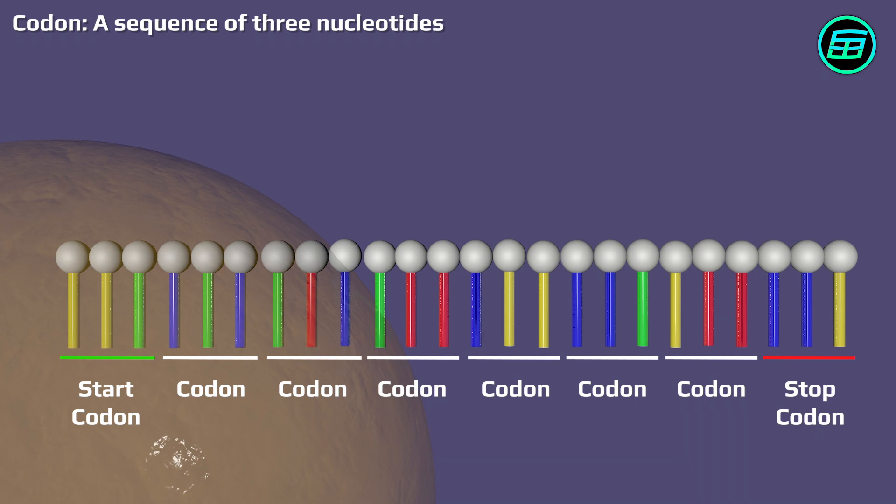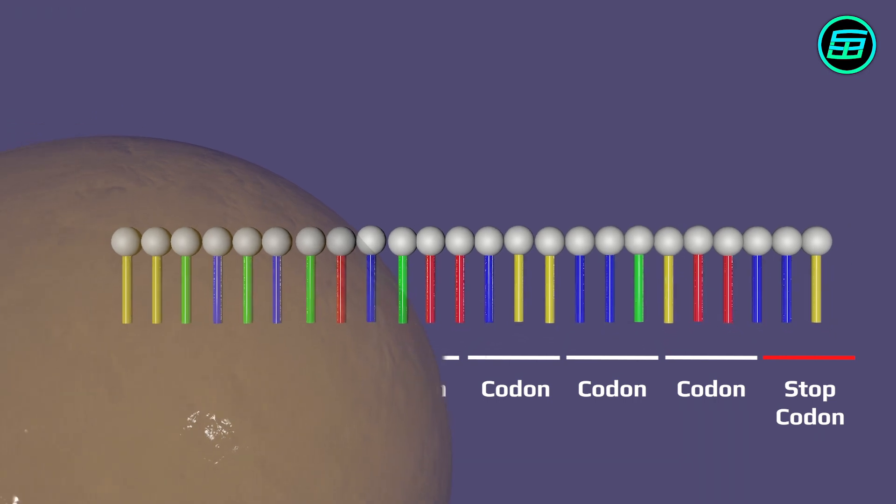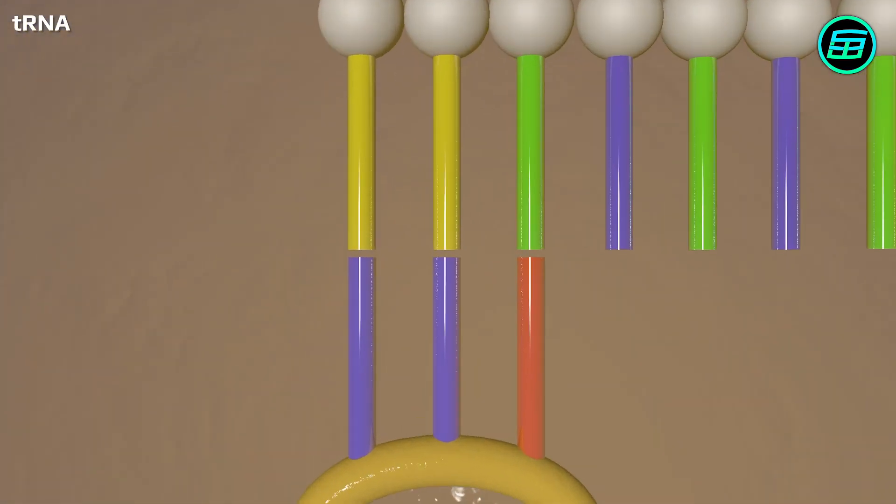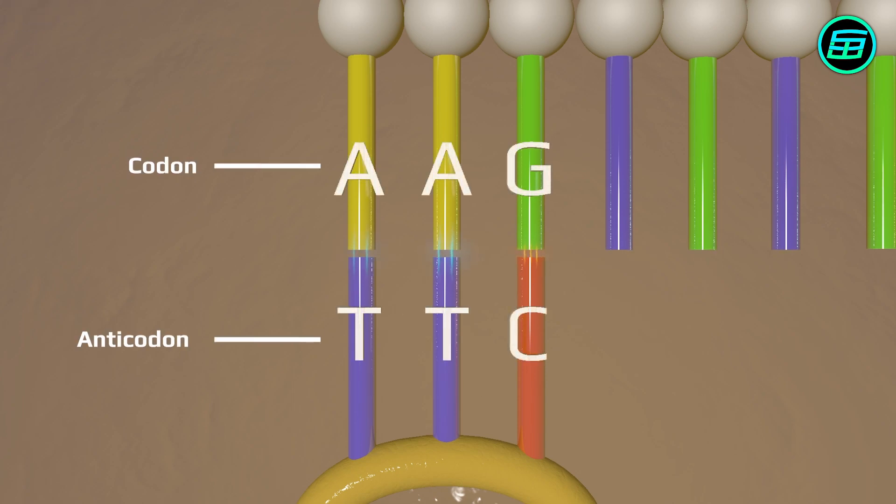Then transfer RNA, tRNA, starts to attach to mRNA triplets from anticodon. Again, the connection of codons and anticodons isn't random because adenine, thymine, and guanine, cytosine bases can attach only to each other.